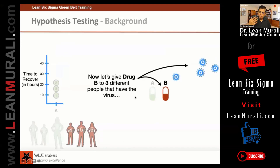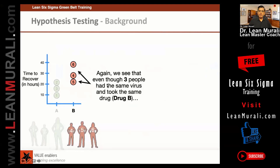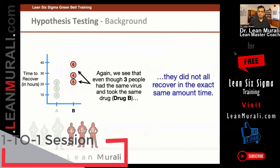Now let's give drug B to three different people that have the virus. After giving it to them, we measure how much time they take to recover. Again, we see that even though the same drug B was given, they actually recover in different times — they did not recover in the same amount of time.